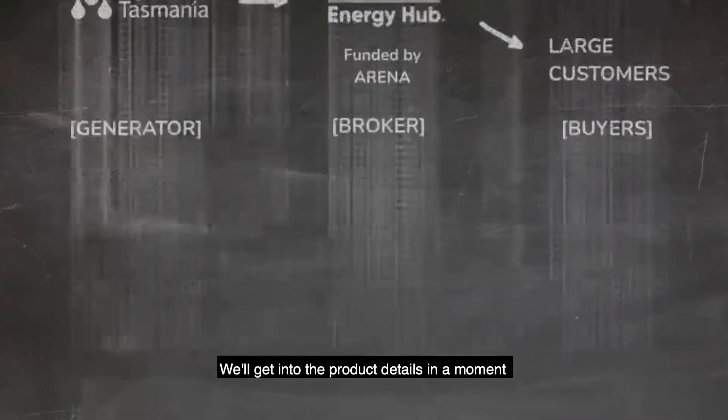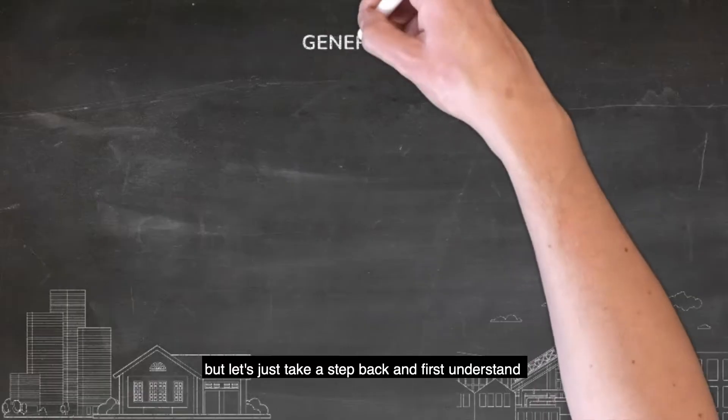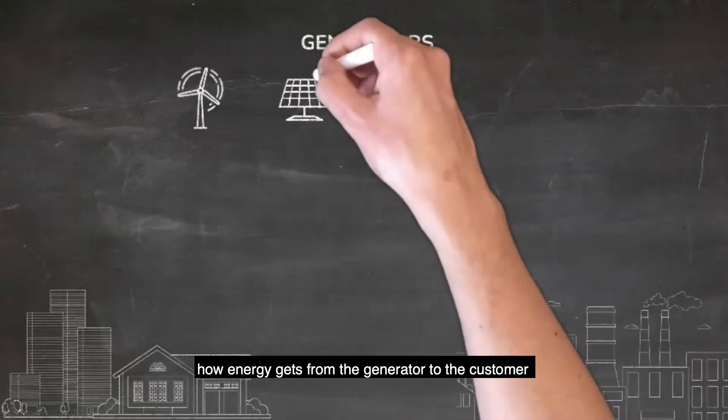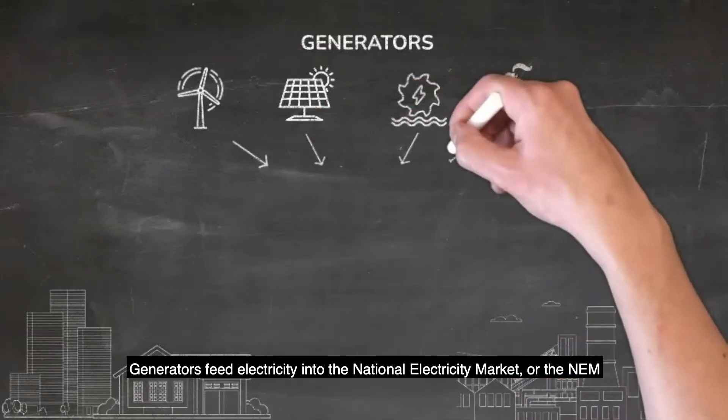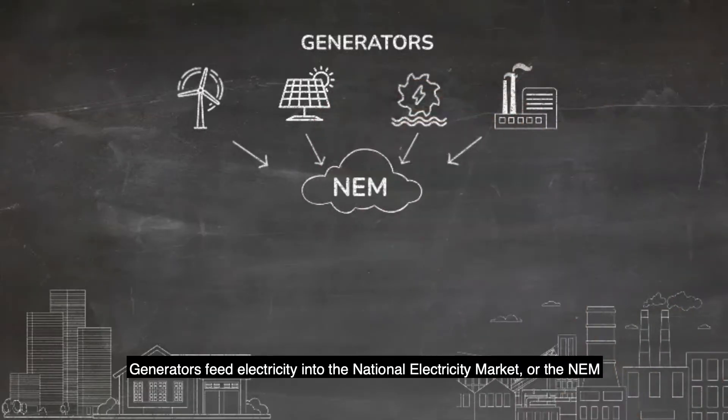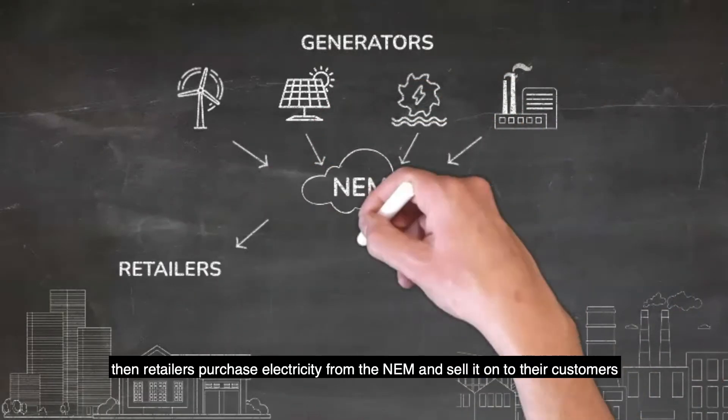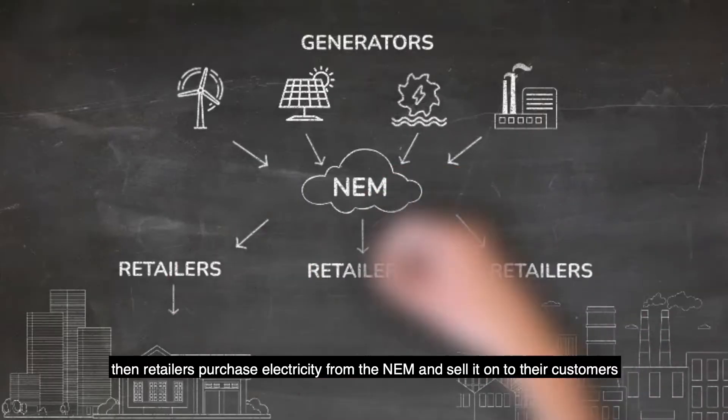We'll get into the product details in a moment, but let's just take a step back and first understand how energy gets from the generator to the customer. Generators feed electricity into the National Electricity Market or the NEM. Then retailers purchase electricity from the NEM and sell it on to their customers.